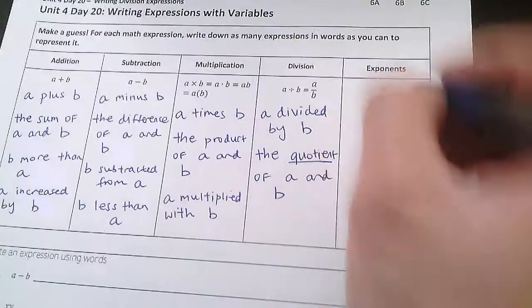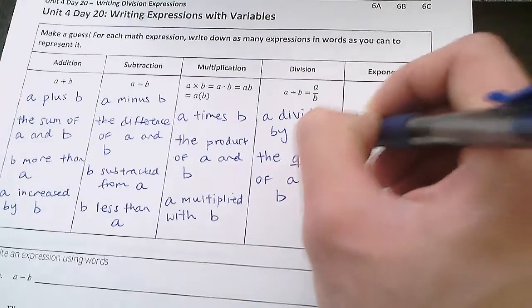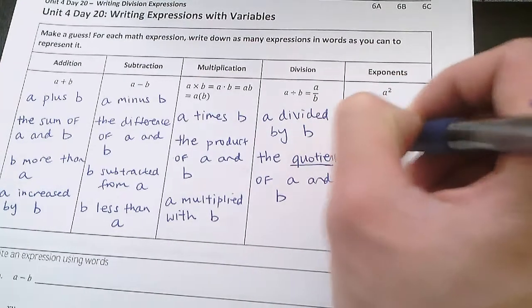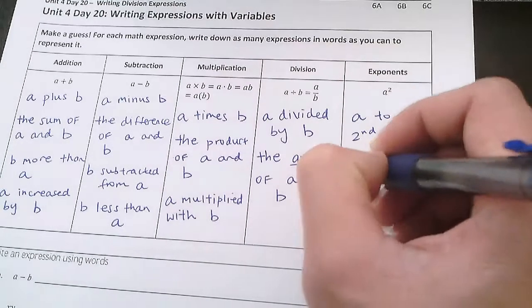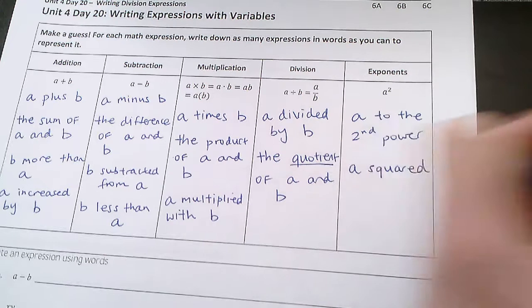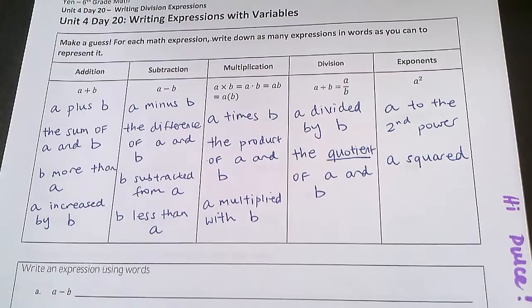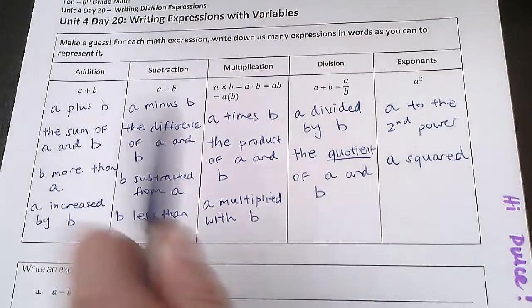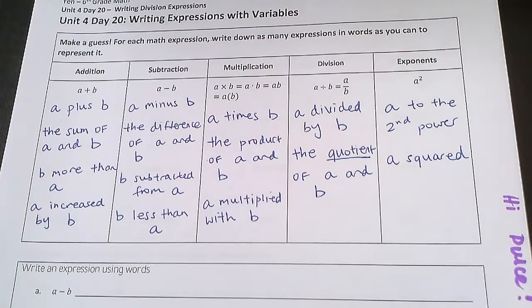Exponents: this we say as a to the second power, or we can also say a squared — it's the same thing as a to the second power. So those are expressions with exponents. If you got at least five of those phrases, five gold stars for you.